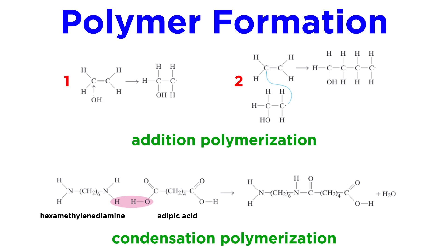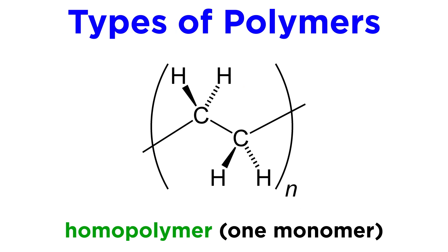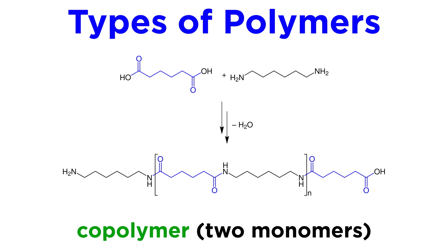A homopolymer is one in which there is only one repeating monomeric unit. A copolymer is one in which there are two different monomers that must combine to form the chain. Nylon is an example of a copolymer.